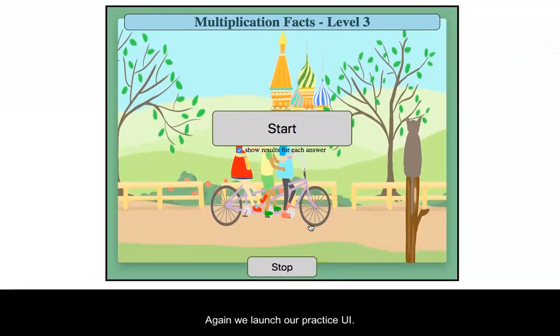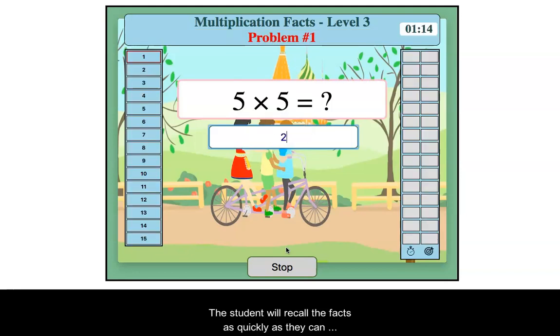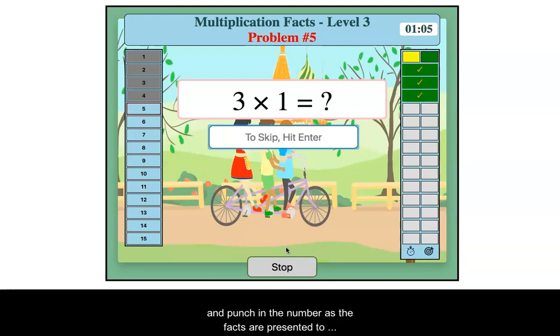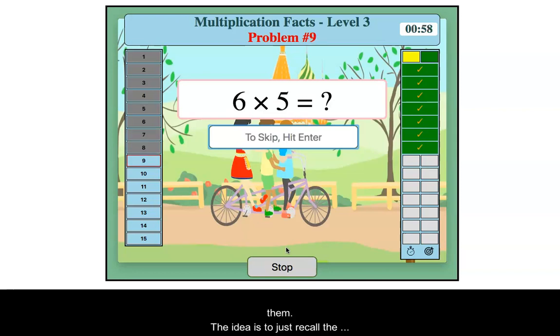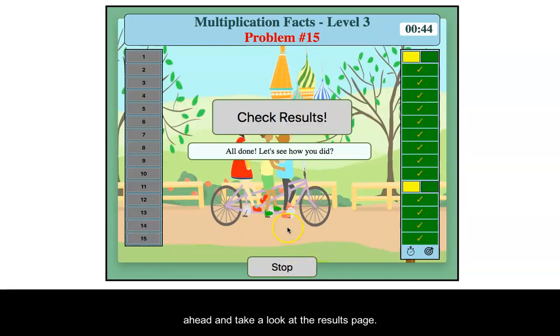And here again, we launch our practice UI and just click start. And the student is just to recall the facts as quickly as they can and punch in the number as the facts are presented to them. And the idea is to just recall from memory as fast as they can and try to not use any other method for recalling the facts. So I'll go ahead and finish this up and then we'll take a look at the results page.